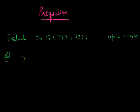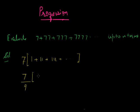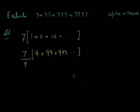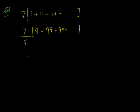Let's take out 7 as a common factor. It becomes 7 times (1 plus 11 plus 111 and so on). Now multiply and divide by 9, giving us 7/9. The idea is to convert these into 9s — so this becomes (9 plus 99 plus 999 and so on). All 9s can be written as (10 minus 1), (100 minus 1), and so on.